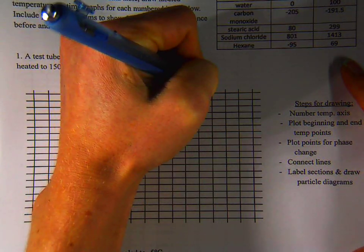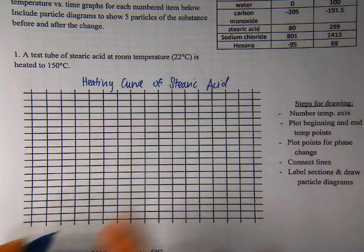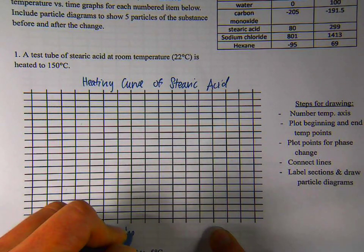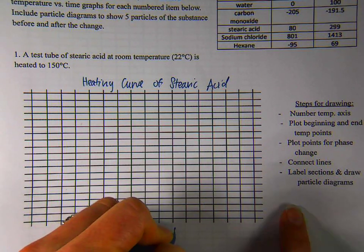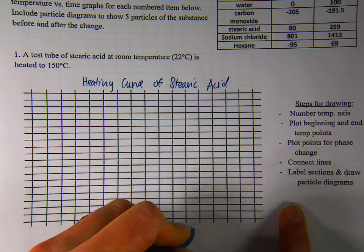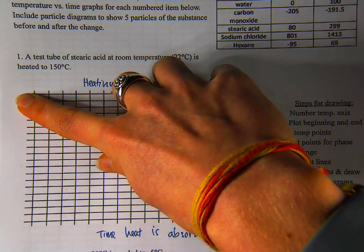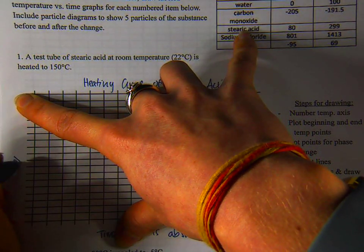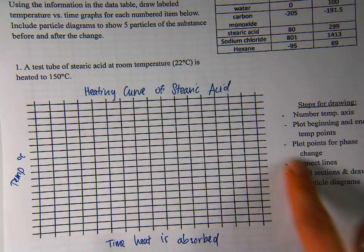On the x-axis, we are going to have time, heat is absorbed. And we don't have to number this. It can be generic. And on the y-axis, we are going to have temperature in degrees Celsius, just like we've seen.